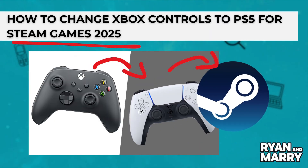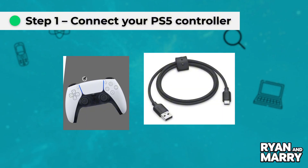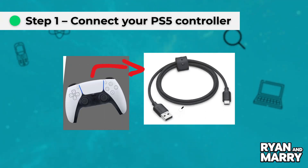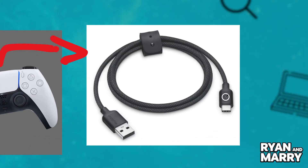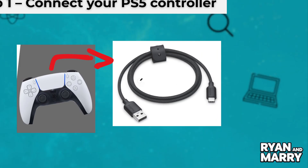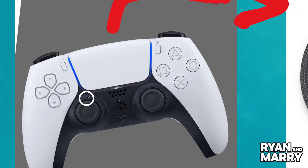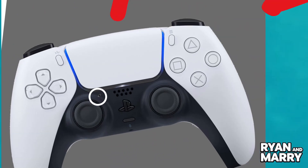Step 1: Connect your PS5 controller. First, connect your DualSense controller. You can use a USB-C cable, or hold the PS and Create buttons until it blinks to pair via Bluetooth.